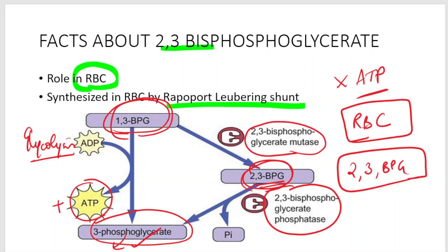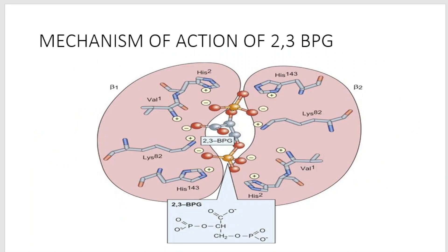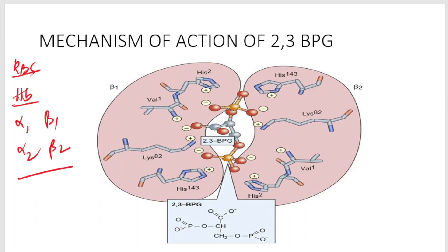What is the action of 2,3-bisphosphoglycerate? In an RBC, hemoglobin has four globin chains: alpha-1, alpha-2, beta-1, and beta-2.